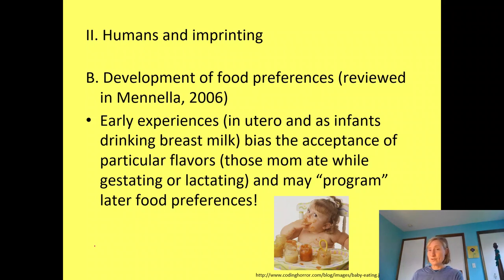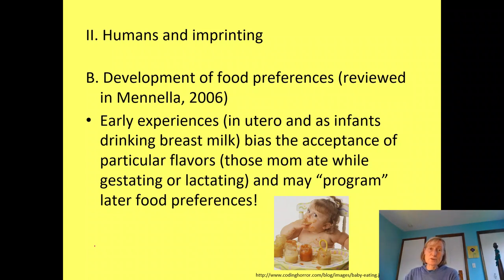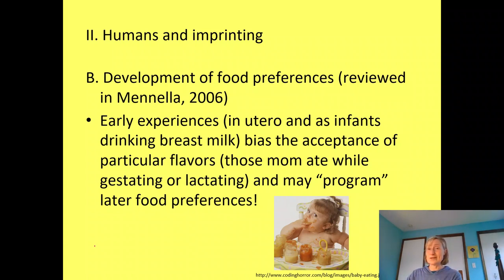Breastfed babies experience more flavors in general than babies fed by formula, and what that translates into as older children is that they're more willing to try new foods — more exploratory in their food selections. Research also shows that fruit and vegetable consumption in eight-year-olds is predicted by breastfeeding duration. The longer you breastfeed, the more likely eight-year-olds are to branch out and try new foods. Food-related experiences during that critical period — roughly six to 18 months — also play a role in preferences later.